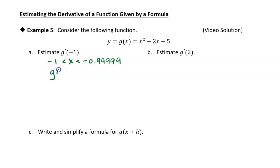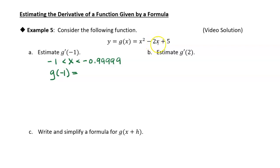So let's do that. I'm going to find g of negative one. I just plug it in: negative one squared is positive one, minus two times negative one becomes positive two, plus five. One plus two plus five is eight, so g of negative one is eight.